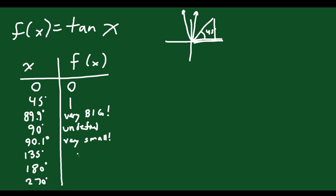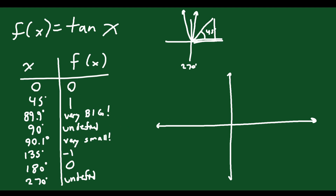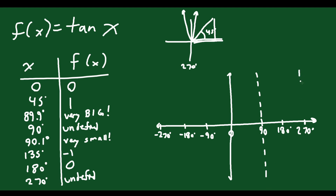At 135 degrees you get negative one. At 180 you get zero. At 270 you get undefined again, because that's the vertical position. When you get to those vertical positions it's going to be undefined. So we can actually sketch this. At all the points where it's undefined — like 90 degrees, 270 degrees — you draw a vertical asymptote. Same for negative 90 and negative 270. This should be symmetrical.